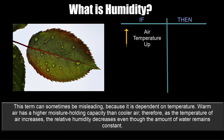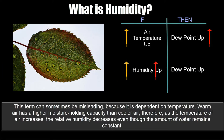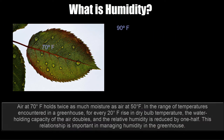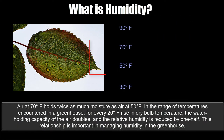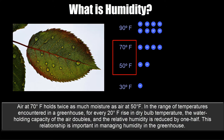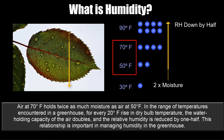This term can sometimes be misleading because it's dependent on temperature. Warm air has a higher moisture holding capacity than cooler air. Therefore, as the temperature of air increases, the relative humidity decreases even though the amount of water remains constant. Air at 70 degrees Fahrenheit holds twice as much moisture as air at 50 degrees Fahrenheit. In the range of temperatures encountered in a greenhouse, for every 20 degrees Fahrenheit rise in dry bulb temperature, the water holding capacity of the air doubles and the relative humidity is reduced by one half. This relationship is important in managing humidity in the greenhouse.